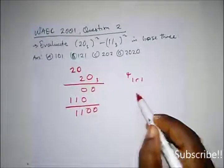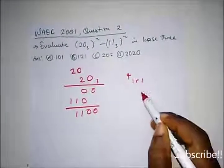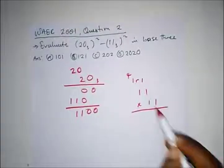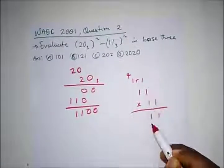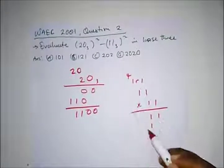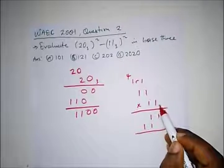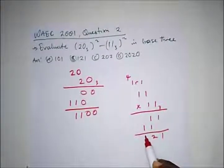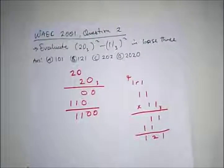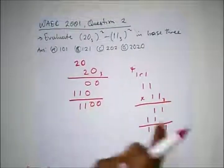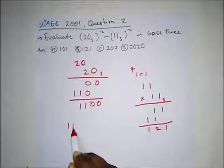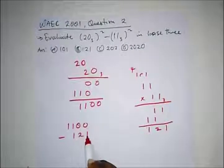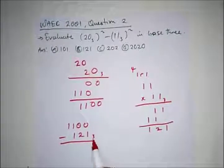Now we also multiply 11 by 11. This gives us 1, 1, 1, 1, and adding those up gives 1, 2, 1 in base 3. So the question asks us to subtract: 1100 minus 121 in base 3.